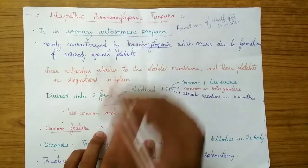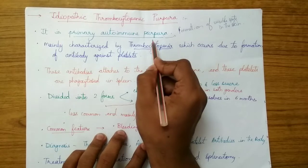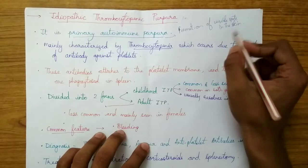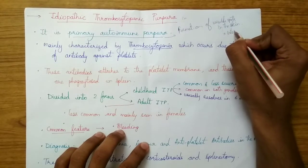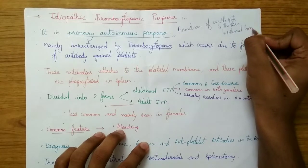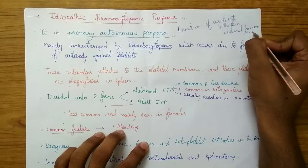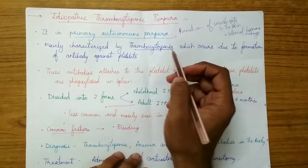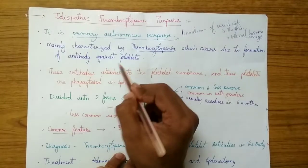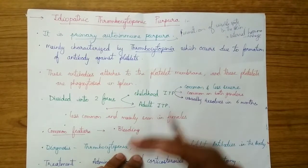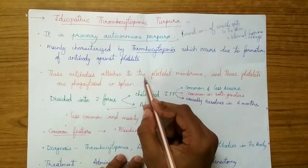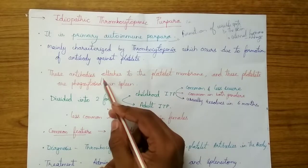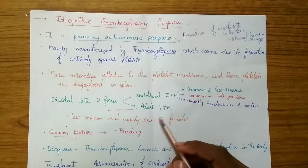Idiopathic thrombocytopenic purpura (ITP) is one of the common dysfunctions of platelets. It is a primary autoimmune purpura — purpura is the formation of visible spots on the skin occurring mainly due to internal hemorrhage. ITP is mainly characterized by thrombocytopenia, caused by the formation of antibodies against platelets. These antiplatelet antibodies attach to the platelet membrane, making the platelets vulnerable to phagocytosis in the spleen.